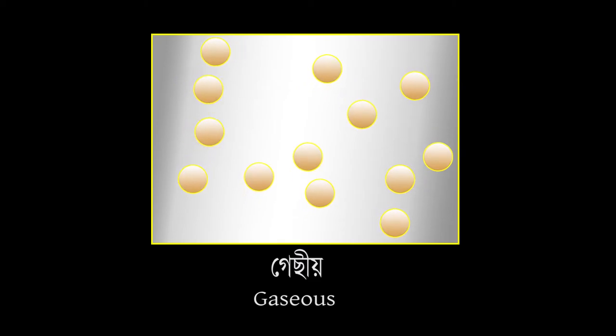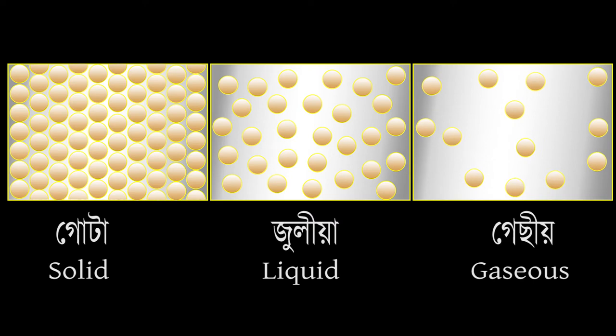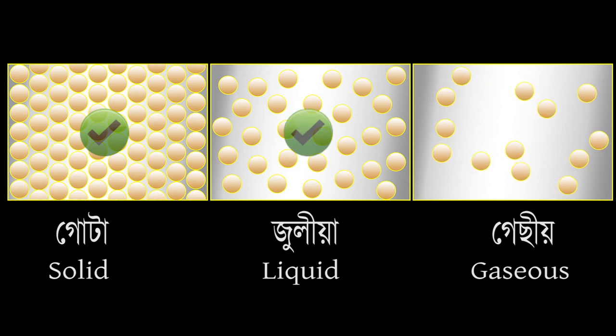In gaseous state, the particles are widely scattered and they move about randomly at high speed. The component particles of a matter in solid state are close together. The particles of a liquid are still close but move freely, and in gaseous state, particles are neither close together nor fixed in place. For this reason, matter occurs in different states.